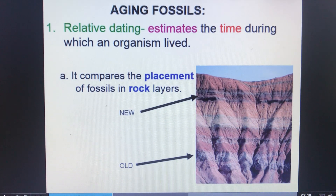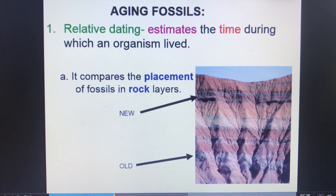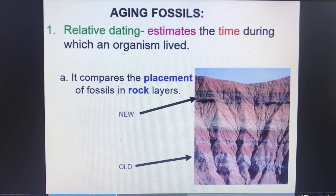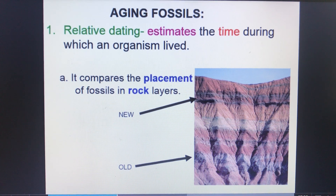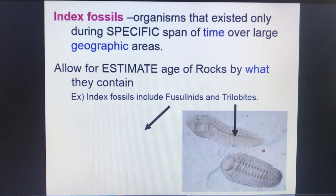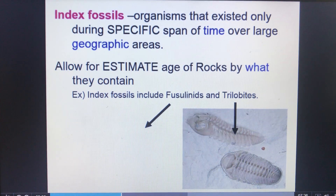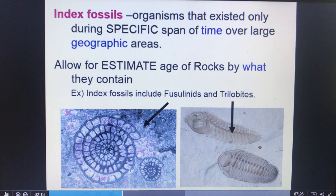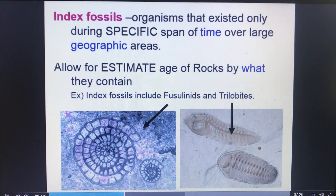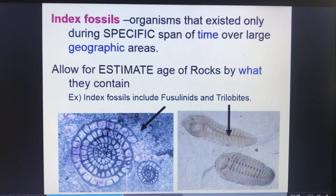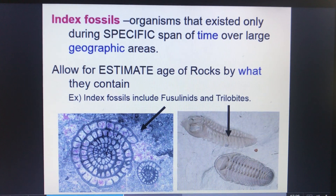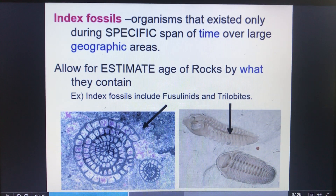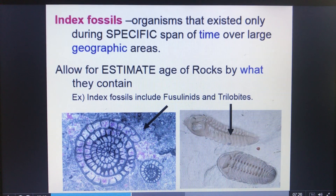When you go to age fossils, remember there are two types: relative and radioactive. Relative dating estimates the time during which an organism lived — if it's high up in the rock layers, it's newer; if it's low, it's older. Index fossils, like fuselage and trilobites, only existed at a specific time, so finding them lets you know exactly how old that rock is.